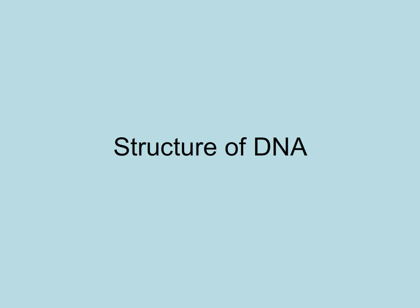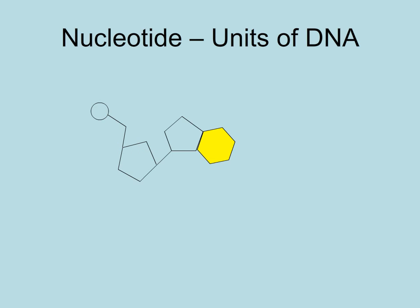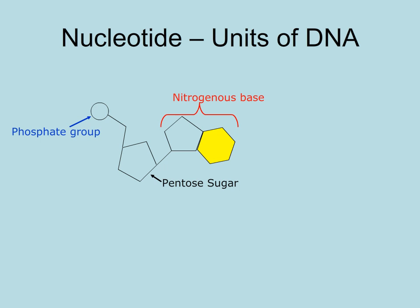Do you remember which monomers compose nucleic acids such as DNA? Yes, nucleotides, which are composed of a phosphate group, a pentose sugar, and a nitrogenous base.